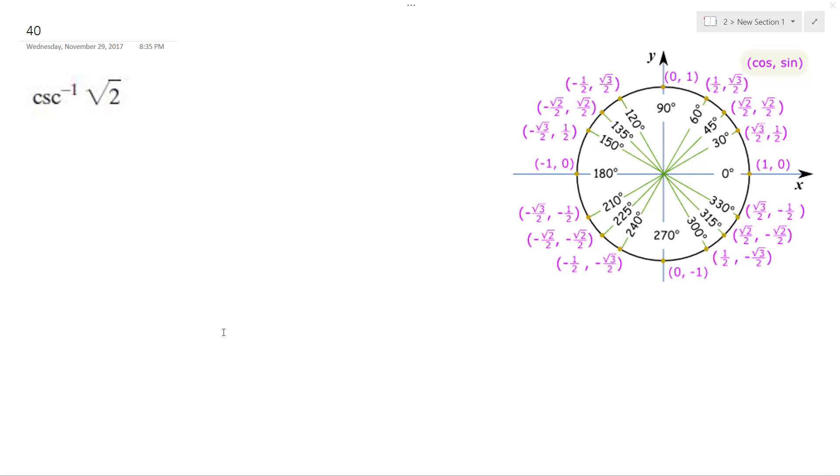All right, inverse cosecant of square root of two. So one over sine of square root of two over one.